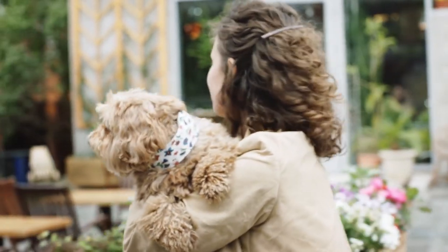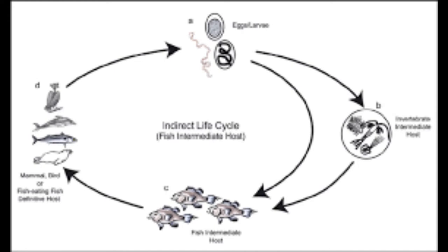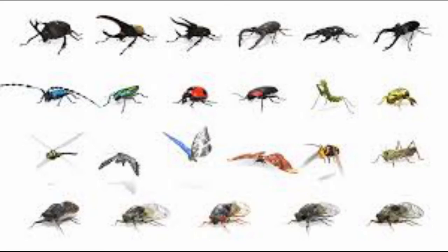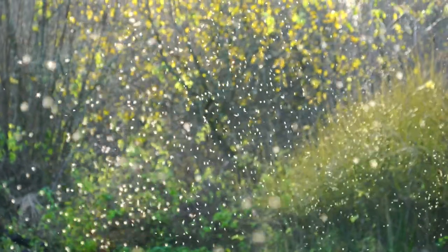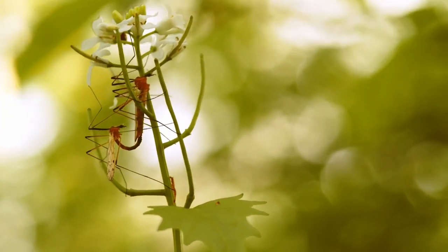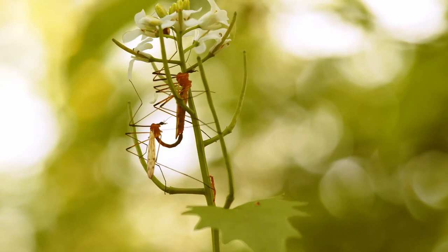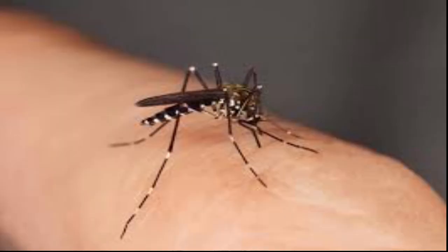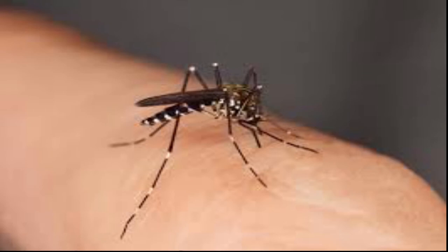Now we look at vectors. We talked about intermediate hosts — just know that vectors are insects or arthropods that require a blood meal for their reproduction. When an intermediate host is a blood-feeding arthropod, it is called a vector. A vector is active because it has the capacity to carry the organism from one definitive host to another definitive host. Vectors harbor the infective stages of the parasites and are able to pick the infective stage from one definitive host to another.